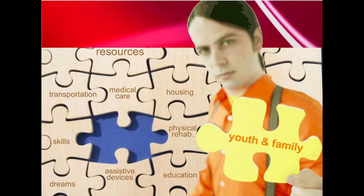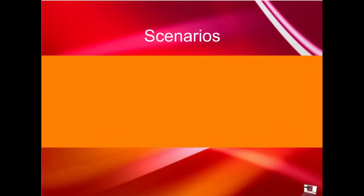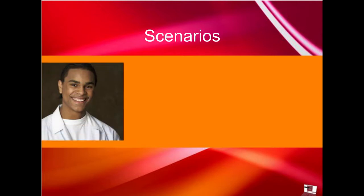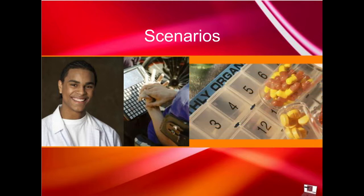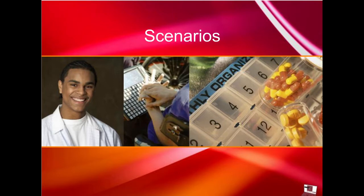Once the needs are identified, professionals must help the youth and family understand available options and support them as they make service choices. The following scenarios illustrate the array of health needs that YTD youth may encounter. Joe has been receiving services under the child mental health system, and his family is worried that his care will be disrupted when he turns 18 because of differing eligibility requirements. Raphaela's assistive communication device needs to be upgraded so that she can use it on her job. Freddie needs to be reminded to take his medication and wants to live independently from his parents.